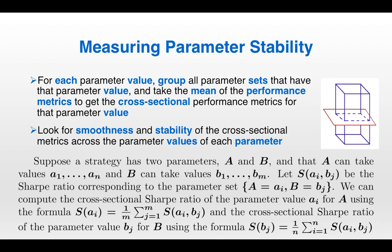Here's a cube with a square intersecting it. The square is the cross-section of the cube. The cube has three dimensions; the square just has two. So the cross-section of the cube is a reduction in dimensionality. When we're taking cross-sectional performance metrics, it's analogous: we're reducing the dimensionality to something we can work with, and we can look for smoothness and stability of the cross-sectional metrics across different parameter values. If they are smooth and stable, that's a good sign the strategy is not overfit. If they're instead very jagged, as in the moving average crossover example, that's evidence that the strategy could in fact be overfit.